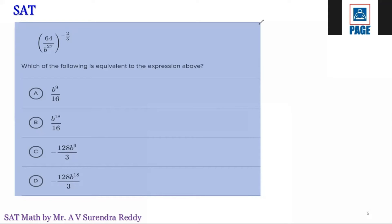Next question. When you have negative powers, the best thing is inverse the fraction and remove the negative sign. So (64/B^27)^(-2/3) means (B^27/64)^(2/3). This is (B^27)^(2/3) / (64)^(2/3). 64 is 4^3. So 3 goes 9 times, 9 · 2 = 18. This is B^18. 4^2 is 16. So B^18/16, which is option B.